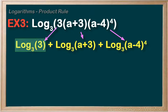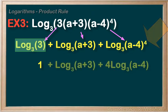We see log base 3 of 3, which we know is 1. And we also notice the exponent here, so we can apply our power rule. We would have 1 plus log base 3 of (a+3) plus 4 times log base 3 of (a-4). Expanded.